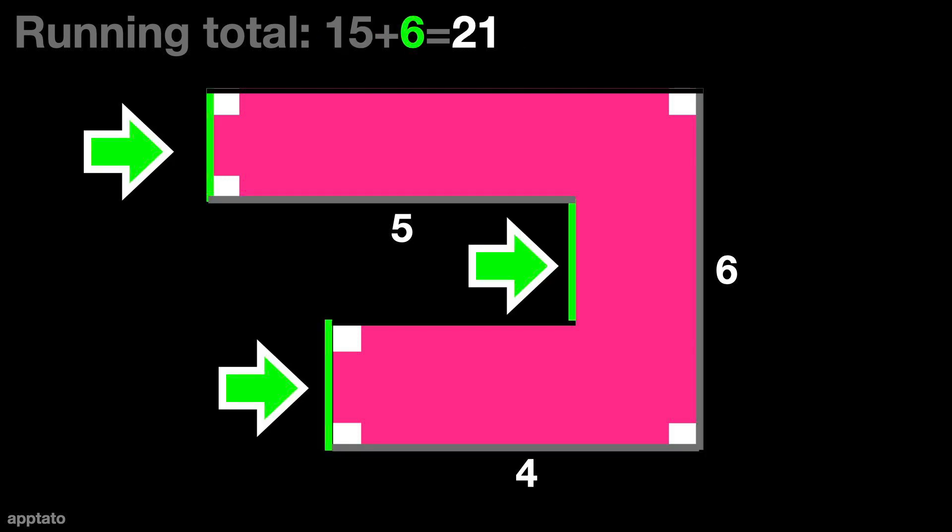Then we take all the vertical sides that all add up to 6. The running total is now 21.